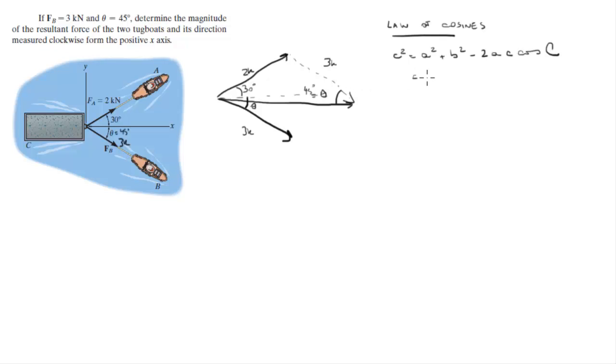This means that C squared equals 2 squared plus 3 squared minus 2 times 2 times 3 times the cosine of 105 degrees.